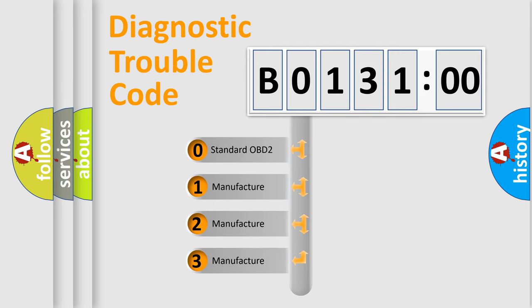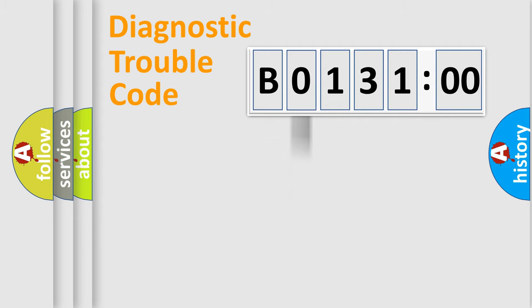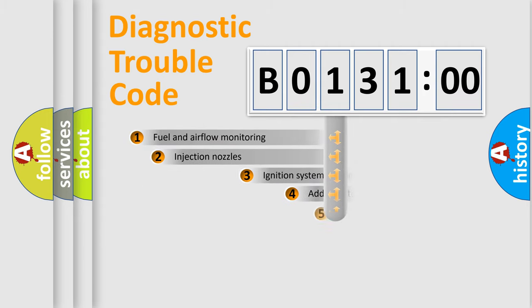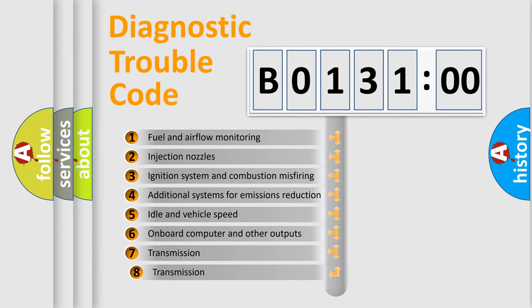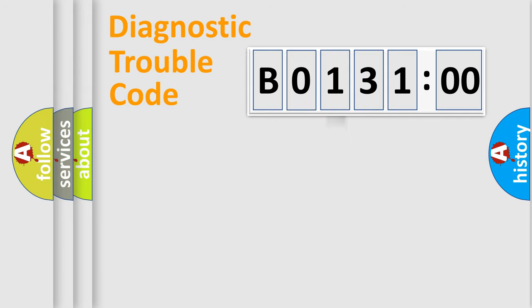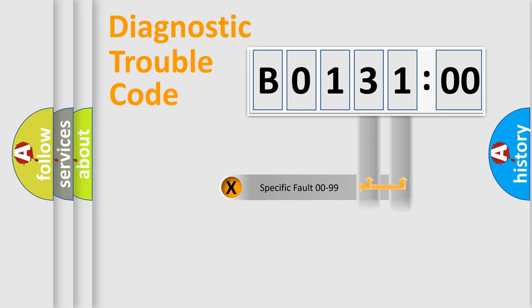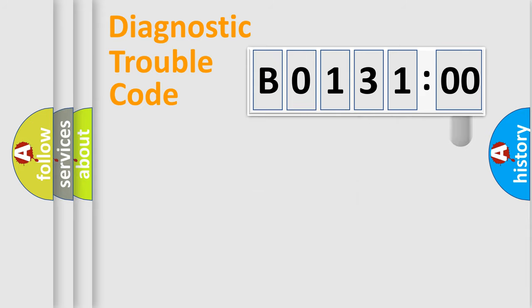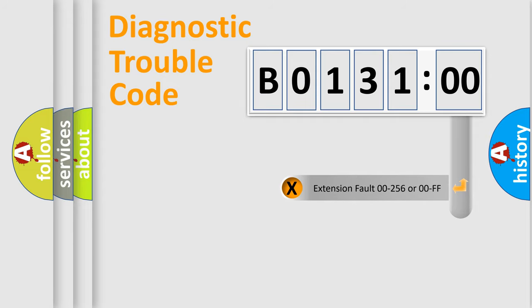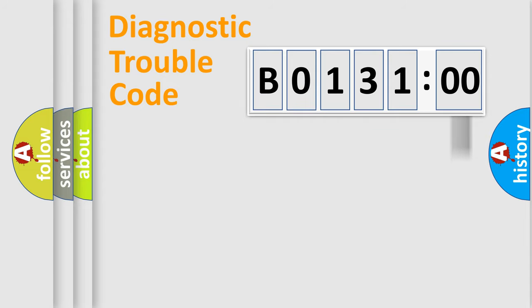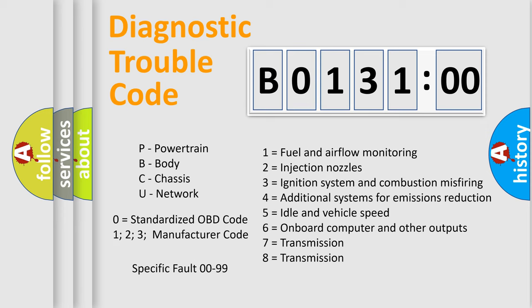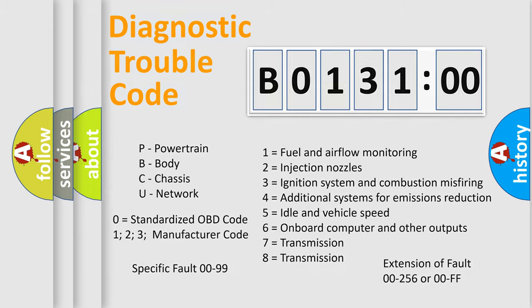If the second character is expressed as zero, it is a standardized error. In the case of numbers 1, 2, or 3, it is a manufacturer-specific error. The third character specifies a subset of errors — this distribution is valid only for the standardized DTC code. Only the last two characters define the specific fault of the group. The add-on to the error code serves to specify the status in more detail, for example a short to ground. Note that such a division is valid only if the second character code is expressed by the number zero.